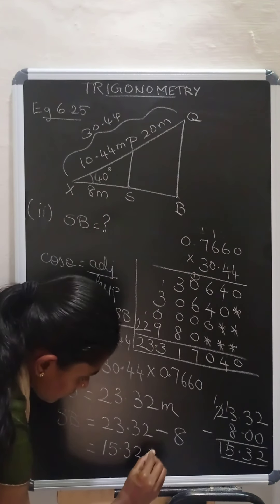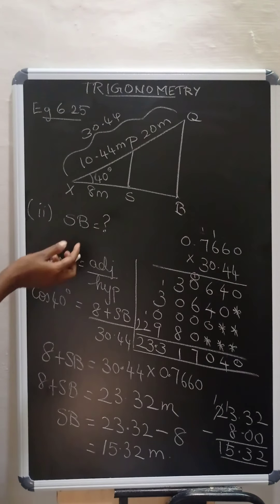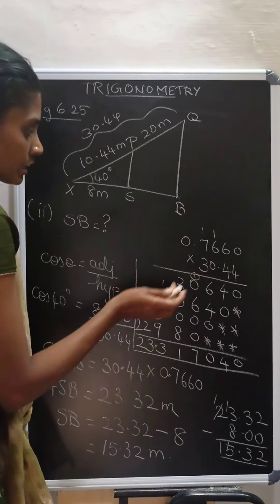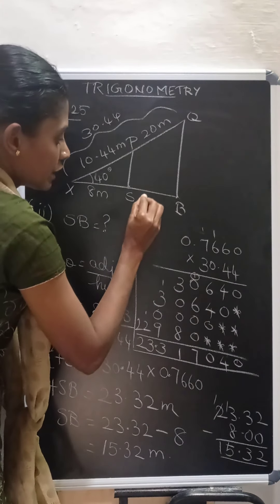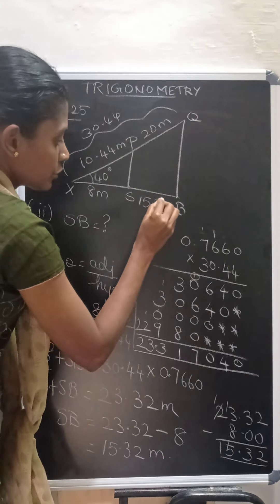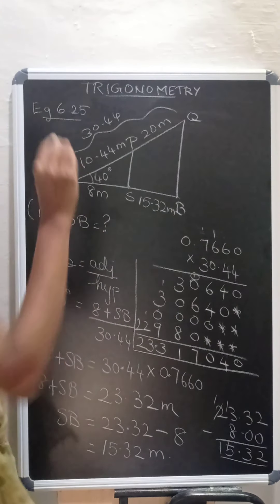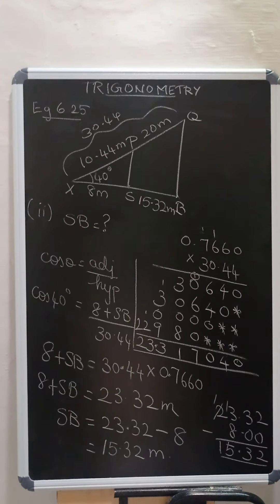That gives 15.32 meters. So the horizontal distance between the small tree and the big tree is 15.32 meters. Thanks for watching.